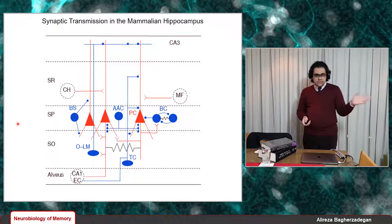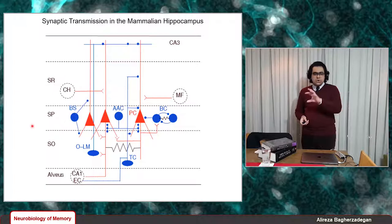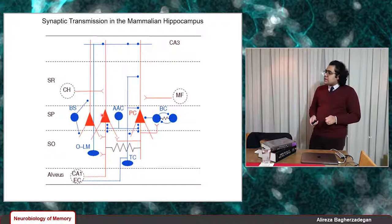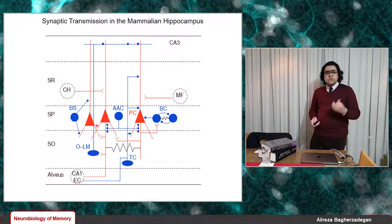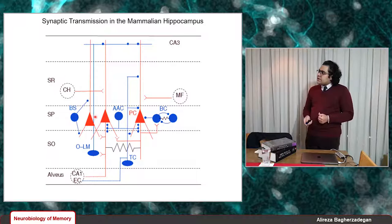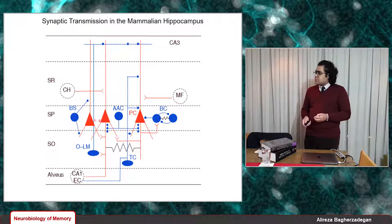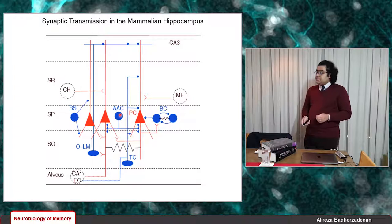In any microcircuit, we have two general populations of neurons: principal neurons, most of which are excitatory, and interneurons, most of which are inhibitory. In CA3 microcircuits, the red triangular cells are principal neurons — pyramidal cells whose cell bodies sit in the stratum pyramidale, which is named for containing all those pyramidal neuron cell bodies. The blue neurons are inhibitory interneurons.